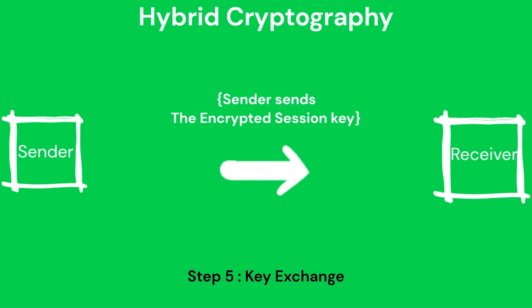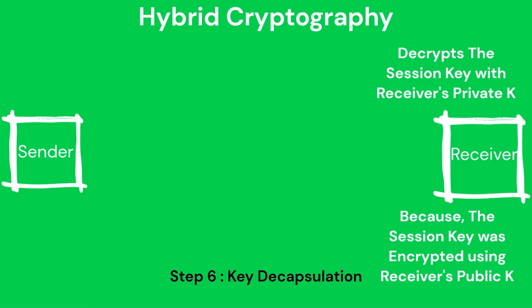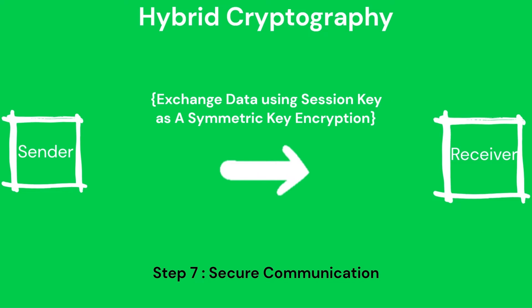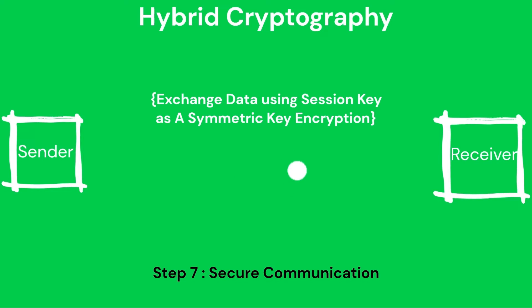Step 5 is key exchange: the encapsulated symmetric key is sent to the recipient or receiver. The next step is key decapsulation: the receiver uses their private key to decapsulate or decrypt the symmetric key from the received ciphertext, obtaining the session key that was originally generated by the sender. In the last step, secure communication: with the session key in hand, both sender and receiver can use symmetric key encryption such as AES to encrypt and decrypt their messages, ensuring the confidentiality and integrity of the communication.